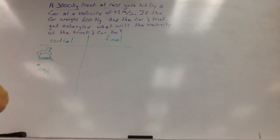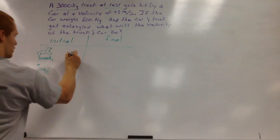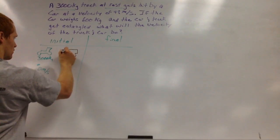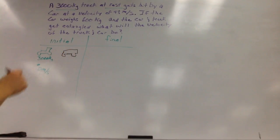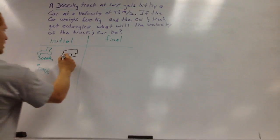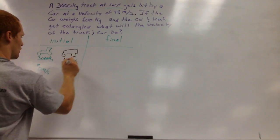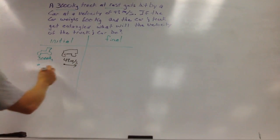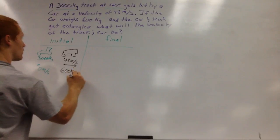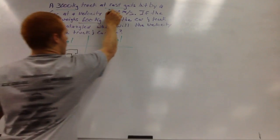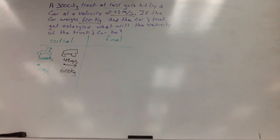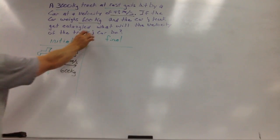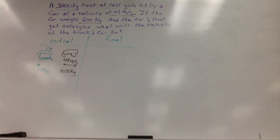Another object — the car, I'm going to do in black. It gets hit by a car at a velocity of 48 meters per second, so the velocity initial of the car is 48 meters per second. If the car weighs 600 kilos. The car and truck get entangled — what will the velocity of the truck and car be? Notice they're going to be moving as one unit, so we only need one picture on the right side.